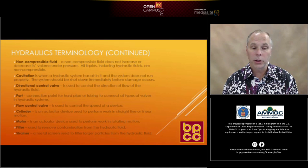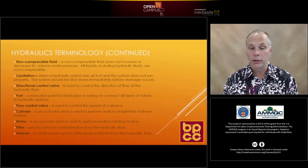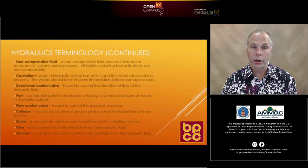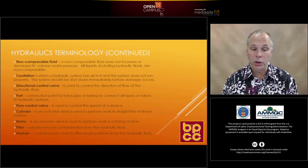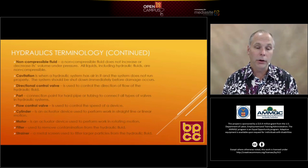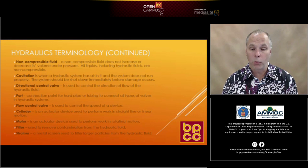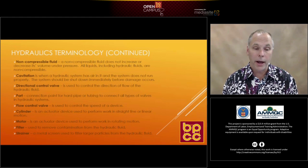A flow control valve is used to control the speed of a device. You want to try to control that by using the fluid outside of the device — after the fact, not before the fact. The flow control valve can be adjusted to help control the device. A cylinder is an actuator used to perform work in a straight line or linear format — up or down, left or right.